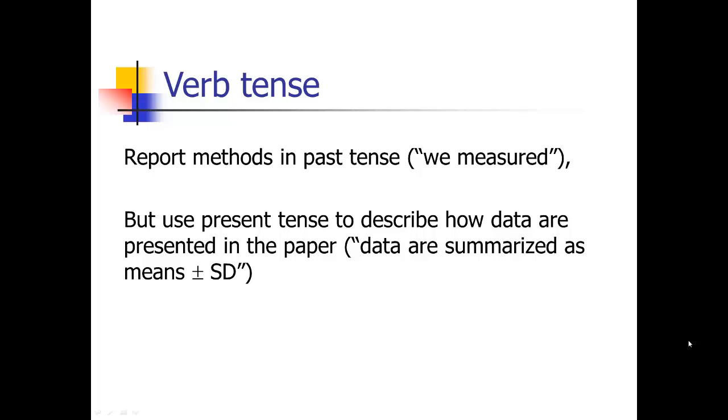But again, same as before, with the results section, you're going to use the present tense to describe how the data are presented in the paper, because when the reader reads the paper, they're still presented in that way. So you would say data are summarized. Notice the passive voice there. But again, you might have passive voice in the method section. So data are summarized as means and standard deviation. Or table one shows. That's going to be in the present tense because the data still are there, they're still presented in that way, they're still showing that.